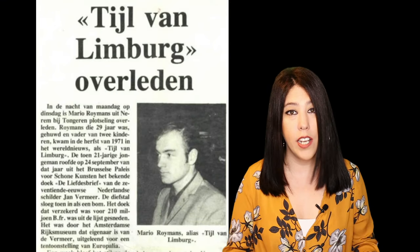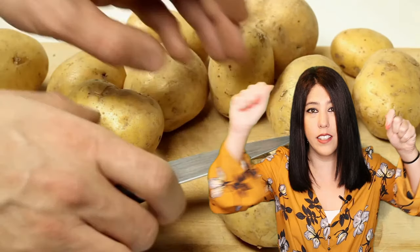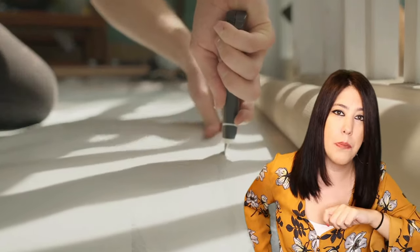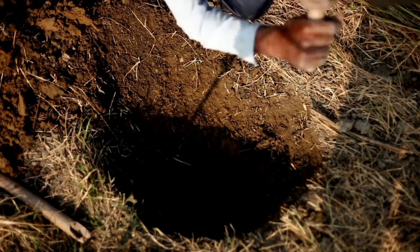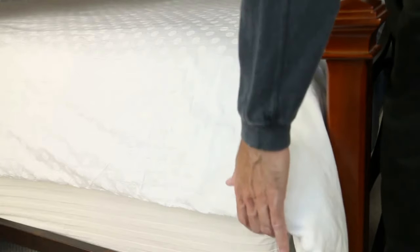In 1971, Vermeer's famous painting Love Letter was stolen in a very badly planned heist. On September 23, 1971, Mario Reumens, a 21-year-old thief, entered the fine arts palace in Brussels and tried to steal the piece, but the painting didn't fit through the window he came in from. So he used a potato peeler to cut the canvas from four sides, rolled it up, put it in his back pocket, and ran away. They caught him after two weeks. The painting was severely damaged due to his recklessness — he buried it in a forest where it sustained water damage, and hid it under his mattress where it was crushed.